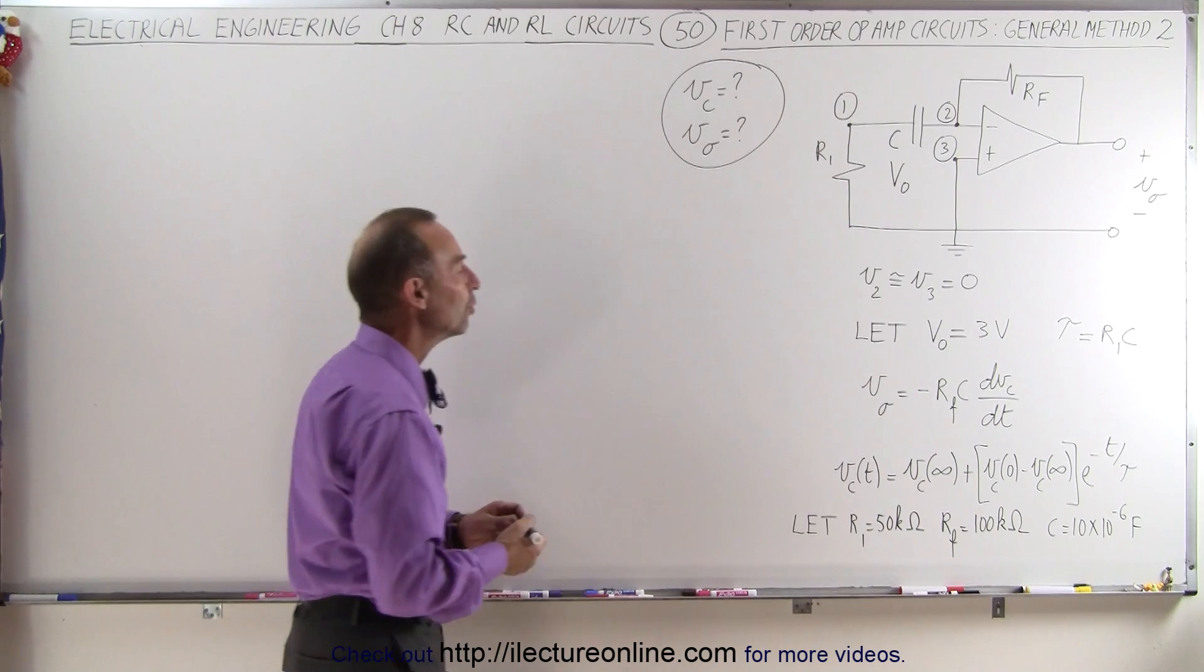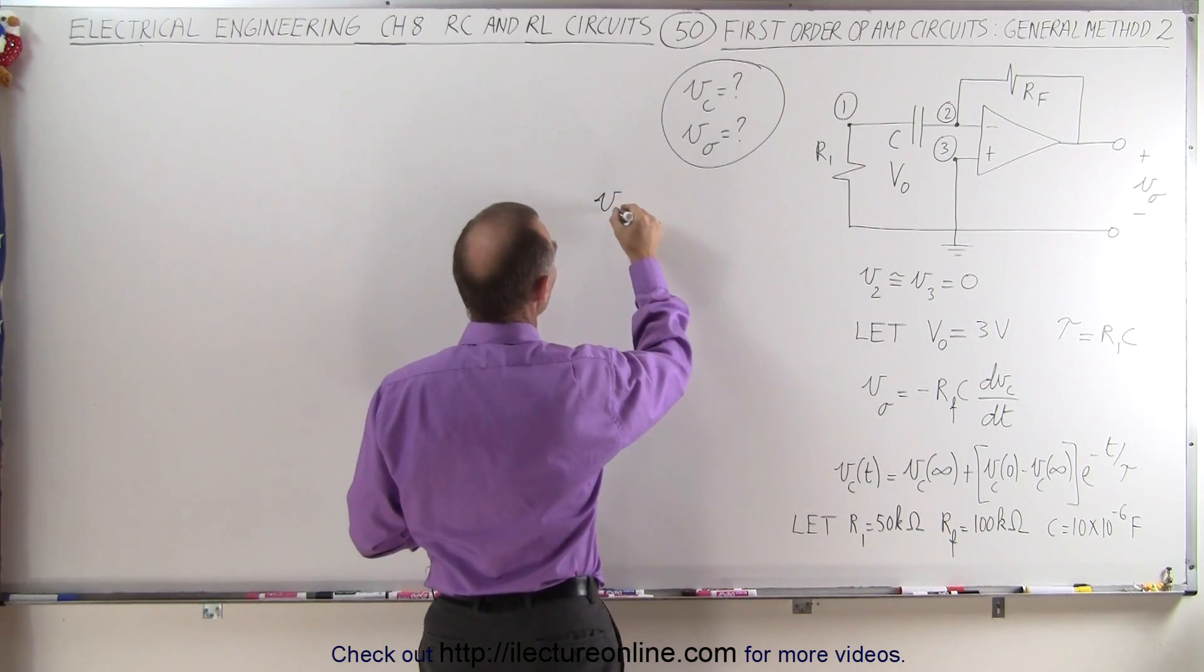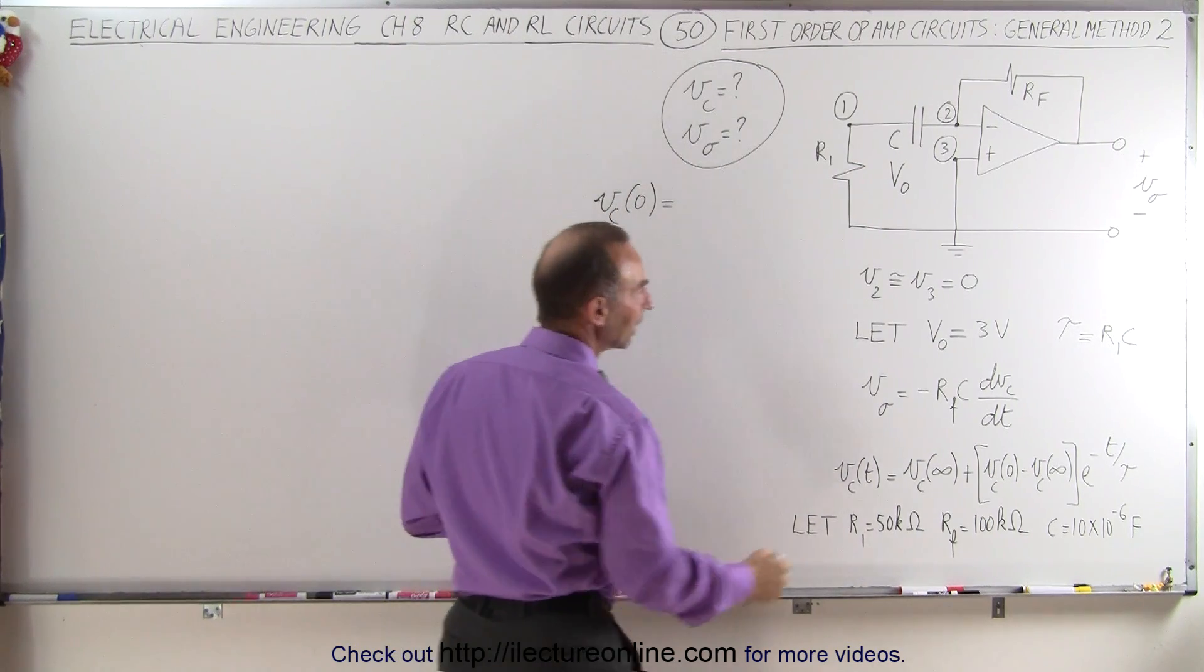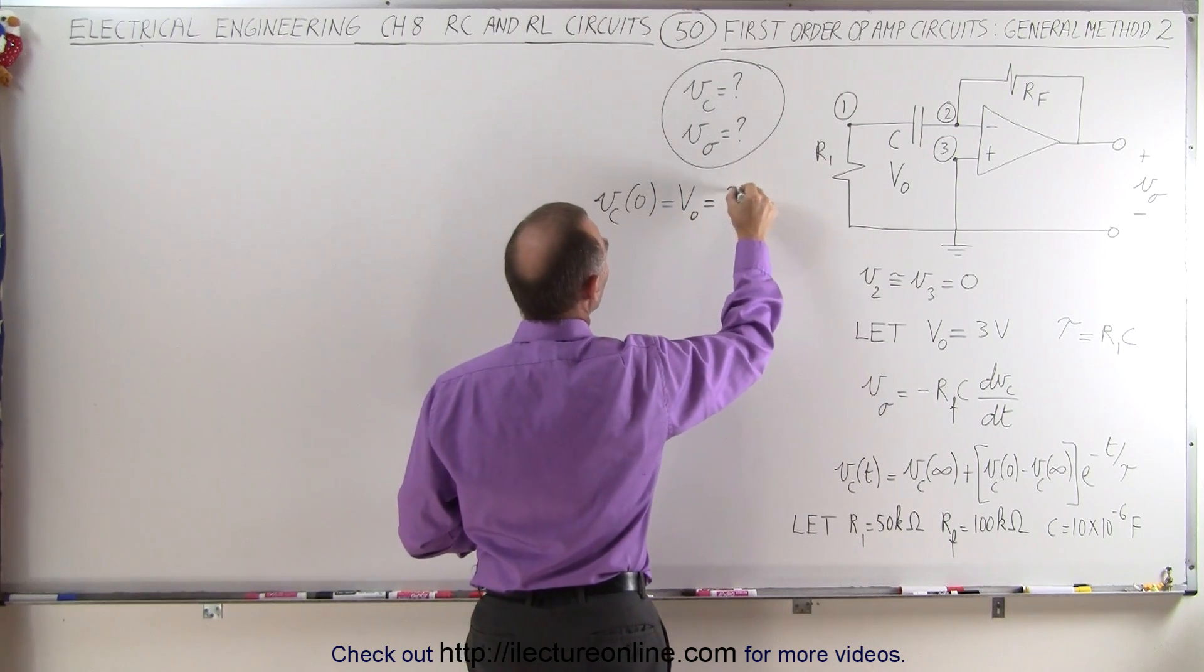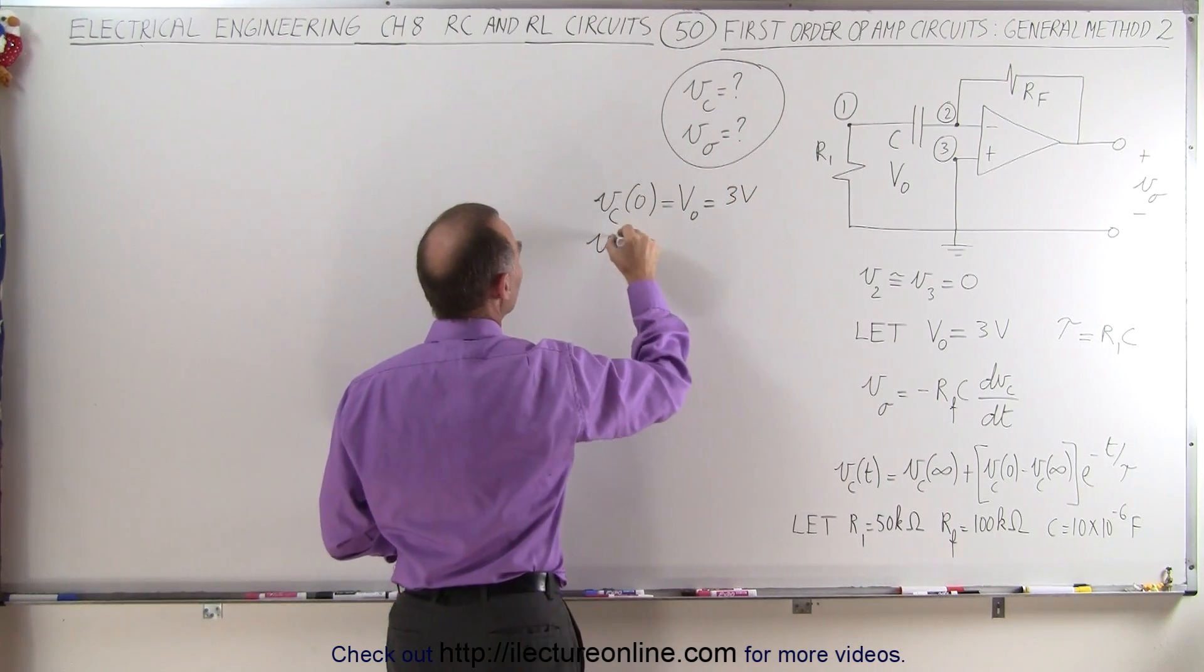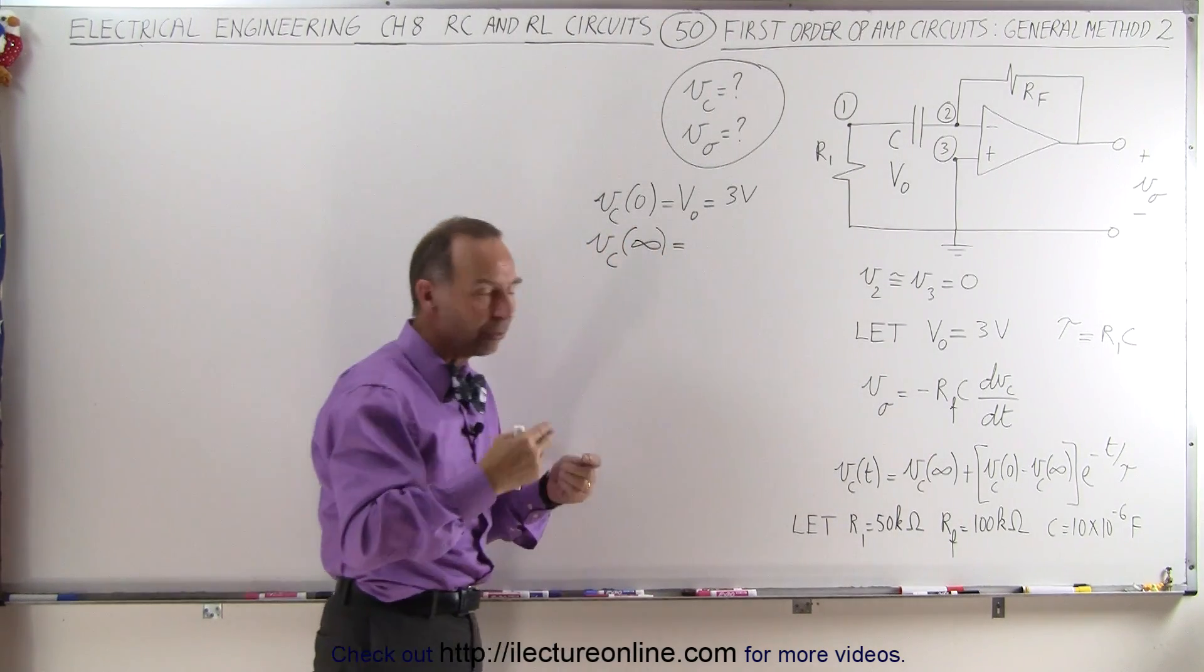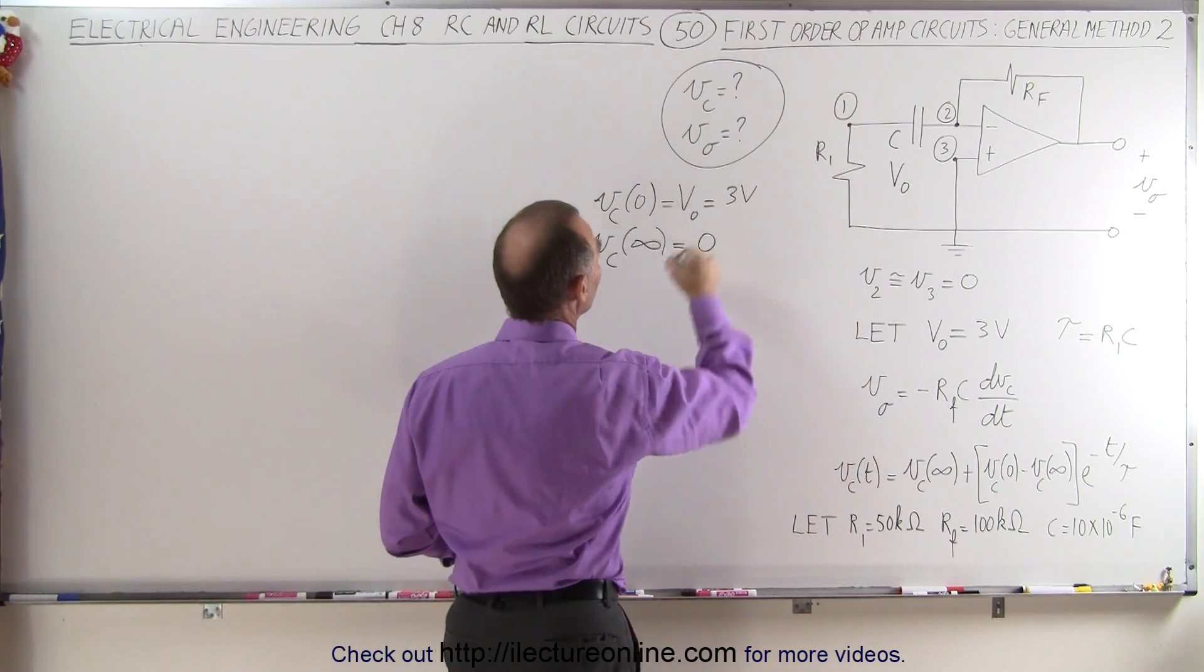So of course what we need to do first is calculate what the voltage is when time is equal to zero. The voltage across the capacitor at time equal to zero is simply given to be 3 volts. That's our initial voltage, V₀, which is 3 volts. Now the voltage across the capacitor at infinity, we know that the voltage will go from 3 volts down to 0 volts, so we know that's going to be equal to zero.